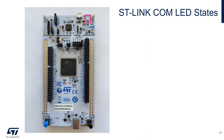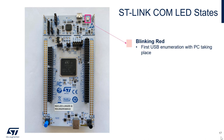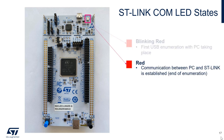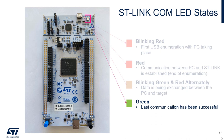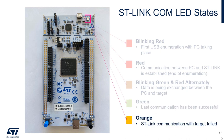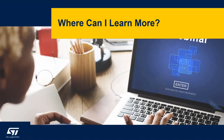There are a total of five different possible ST-Link COM LED states. Blinking red indicates the first USB enumeration with the PC is taking place. Solid red indicates the communication between the PC and ST-Link has been established. Blinking red and green alternately indicates that data is being exchanged between the PC and the board. Solid green indicates that the last communication has been successful. Solid orange indicates that the ST-Link's communication with the target has failed.